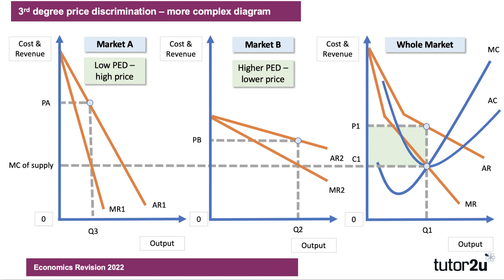In terms of profit, profit in market A is shown by the orange shaded area because price is above cost. And there's a profit also to be made in market B — if the cost of supply is the same to both markets, you can still make a profit even with differential pricing. The two orange areas of profit from each group are hopefully bigger than the green area on the right side. So third degree discrimination can lead to higher revenues, higher sales, and also higher profits.